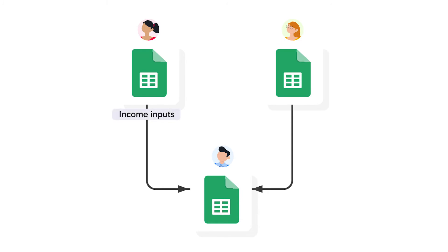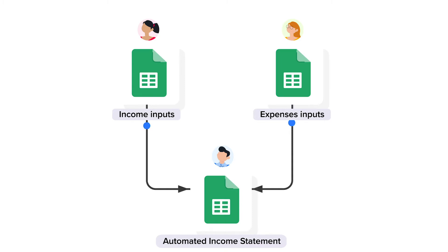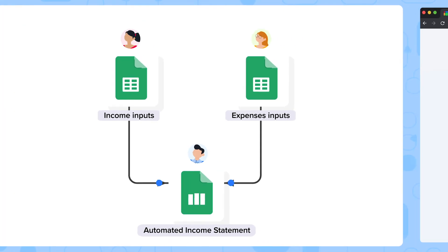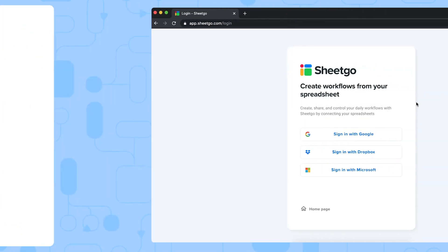The Shico income statement workflow contains three Google Sheets files: a spreadsheet to track income, a separate spreadsheet to track expenses, and the third file is the automated income statement master sheet. This master sheet automatically creates an income statement and other dashboard charts using the data coming from your income and expenses spreadsheets.